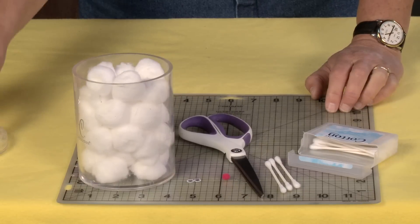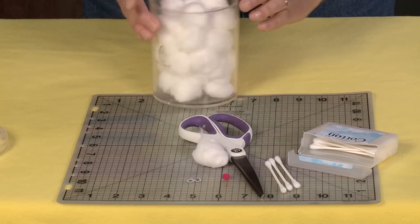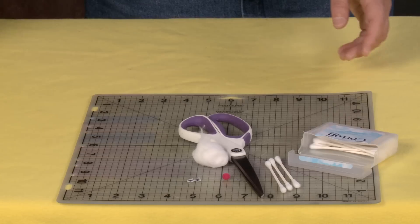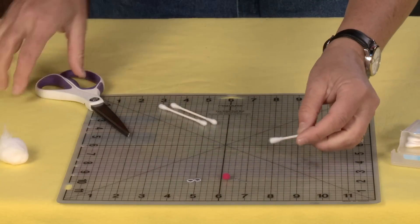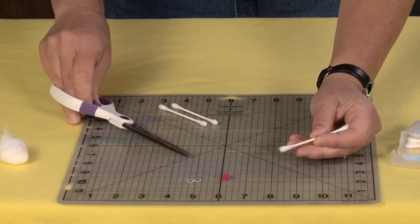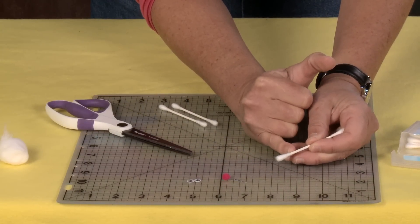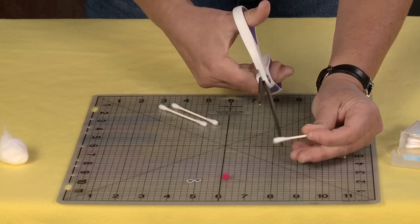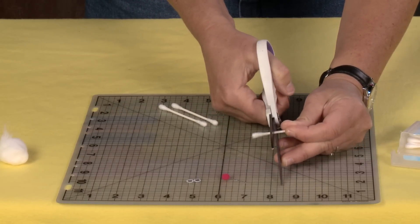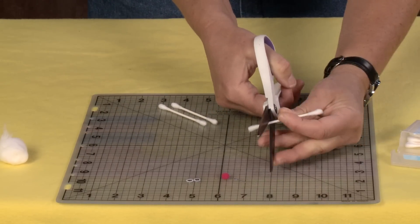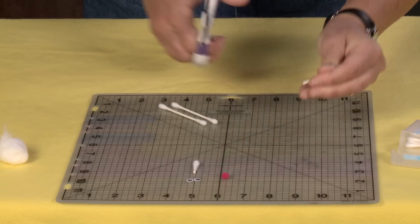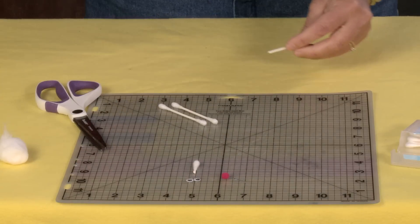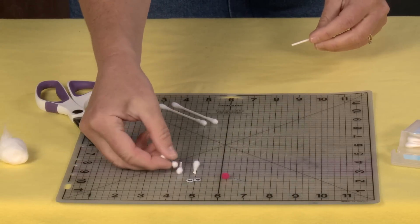So first thing I'm going to do is take a little cotton ball and cut my cotton swab about a half an inch below the cotton part on the stick. I need three pieces like this: one, two, three.